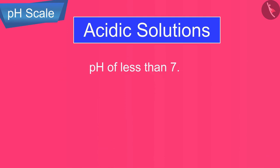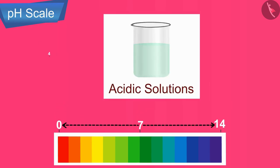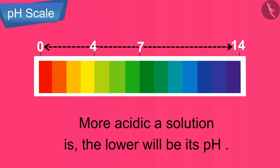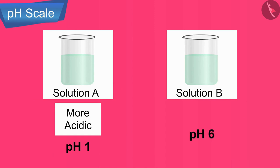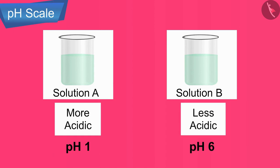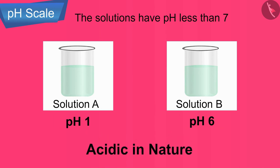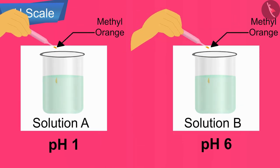Acidic solutions have a pH of less than 7. For example, a solution with a pH of 4 is acidic in nature. The more acidic a solution is, the lower its pH. For example, a solution of pH 1 is much more acidic than a solution of pH 6. All solutions with pH less than 7 are acidic and turn blue litmus red, and also turn methyl orange indicator red.